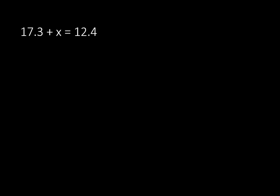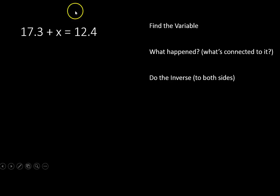Our first question for today is 17.3 plus x is equal to 12.4. Our steps for solving for a variable are going to remain the same. We are going to find the variable, ask what happened to the variable or what's connected to it, and then do the inverse on both sides.